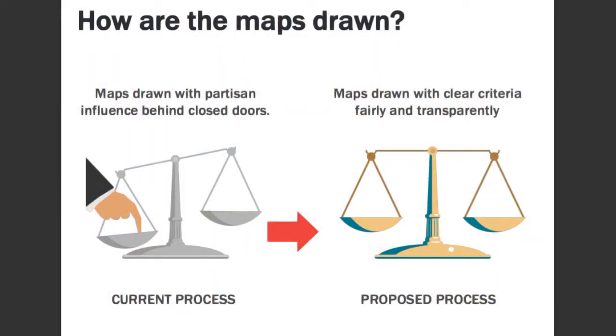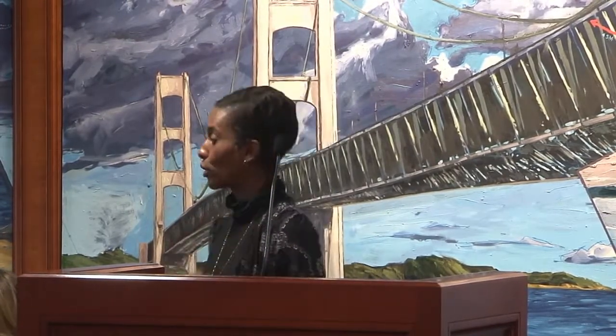The current process with the two committees in the state senate and state house is usually done behind closed doors. There is testimony available if you look back at how the last redistricting session went down. What I want to reiterate is that this new commission — this Independent Citizens Redistricting Commission — would be drawing maps with clear criteria, fairly and transparently. Anyone from Michigan who wants to look at the records, testimony, or commissioners' conversations would be able to do so. They can also provide data or maps to the commissioners for consideration.